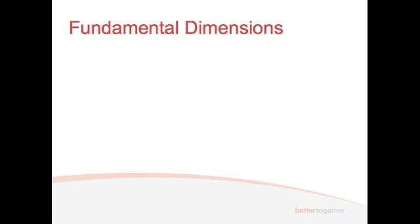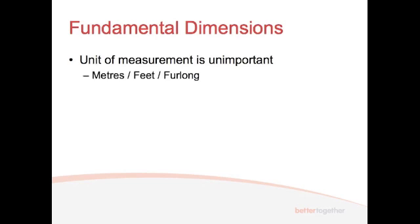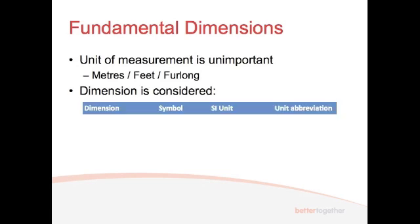Why have I highlighted 'fundamental'? Essentially, there are some fundamental dimensions that we look at. The unit of measurement is actually unimportant — it doesn't matter whether you're measuring in metres, miles, feet, or even furlongs. All of those things are related to length. So we only consider the dimension. There are essentially six fundamental dimensions. The first one is length, denoted with the symbol L. The SI unit of length is metres, abbreviated m.